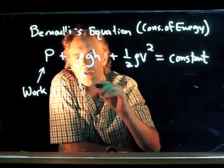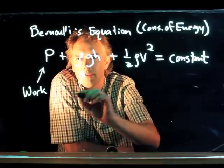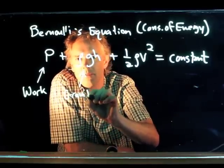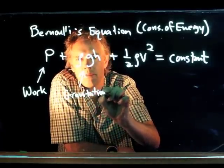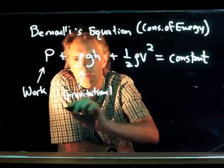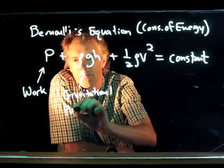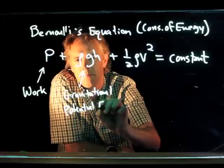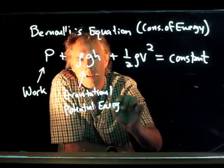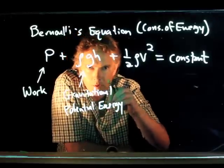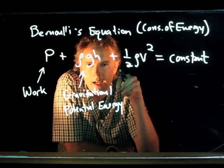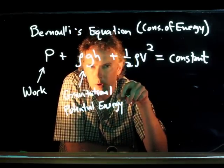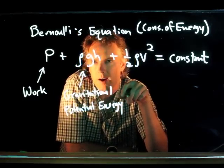Rho gh is, of course, gravitational potential energy. If I lift up a drop of water to a height h, then there is a potential energy that is associated with that drop.